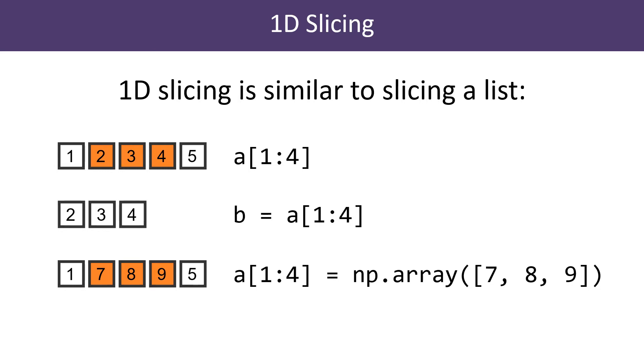There is one important difference between list slices and array slices. When you slice a list, the slice contains a copy of the section of the list. When you slice an array, the slice points to the same data as the array. We will go into more detail later.